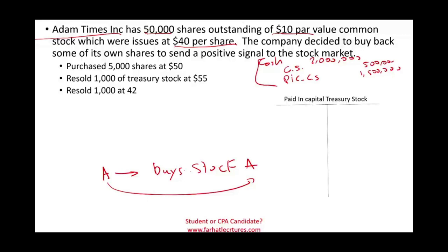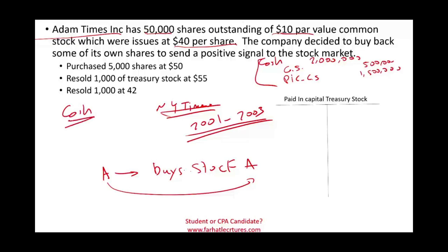The company decided to buy back its own shares to send a positive signal to the market. I called it Adam Times to illustrate what the New York Times actually did between 2001 and 2003. They were very confident about their company, so they bought other physical newspapers across the country and bought back their own shares. They had a lot of cash and did not focus on their online presence — instead, they used that cash on buybacks and acquiring physical newspapers.